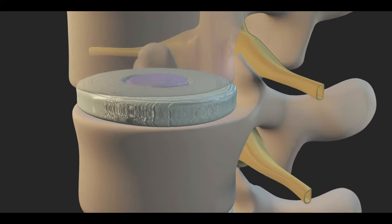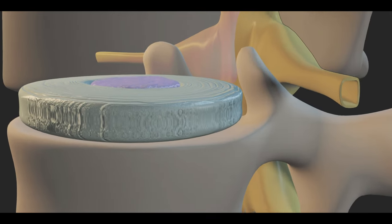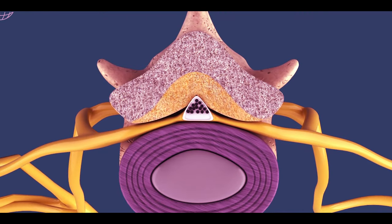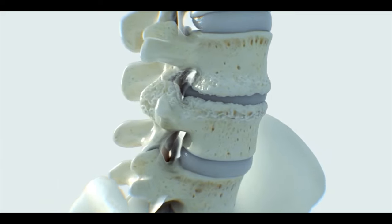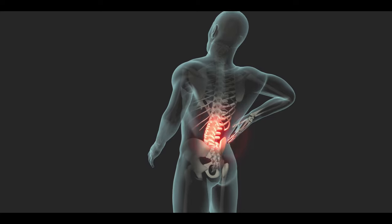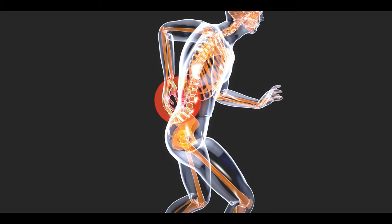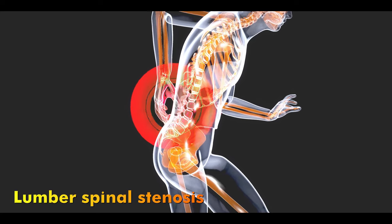Sometimes, if tissues and bones exert pressure on the space around the spinal cord called the spinal canal, it causes nerve and spinal canal compression, which results in severe back pain in patients. This is called lumbar spinal stenosis.